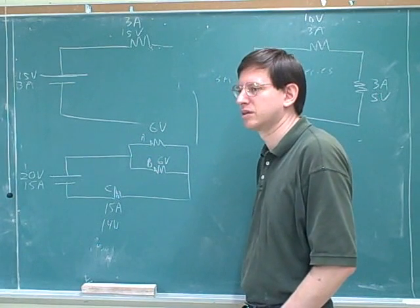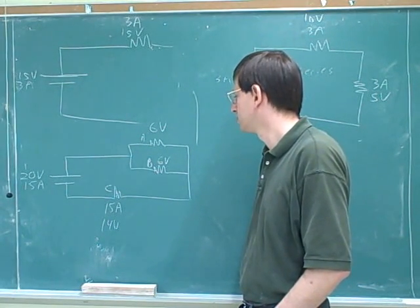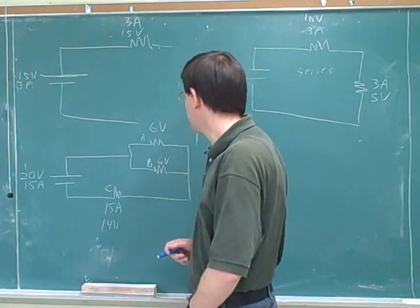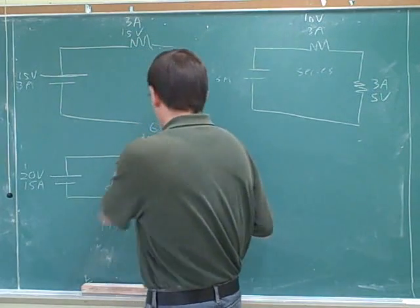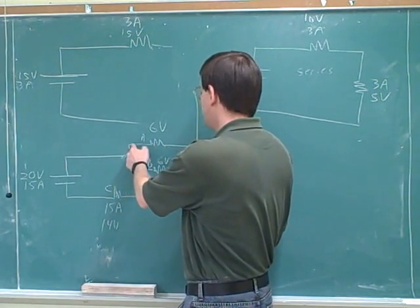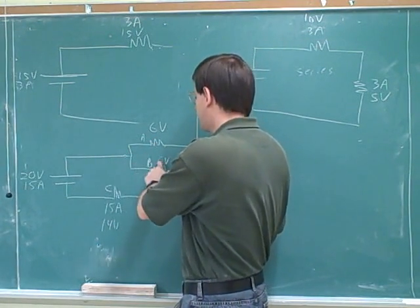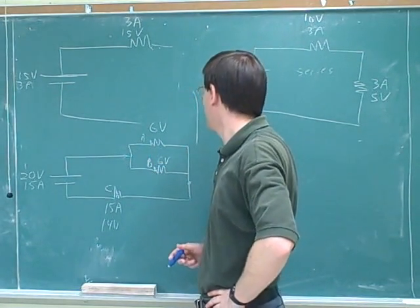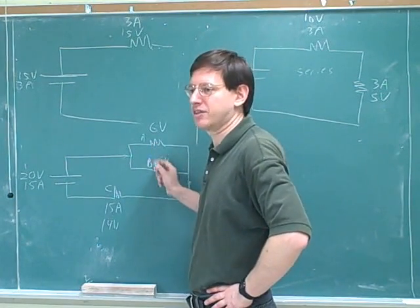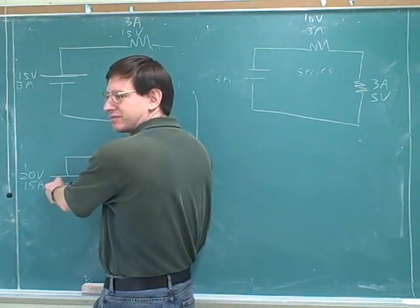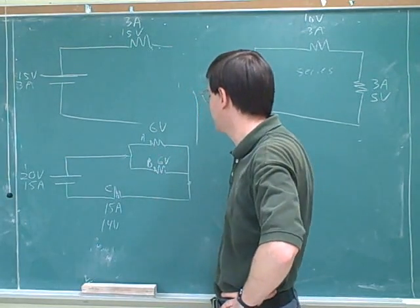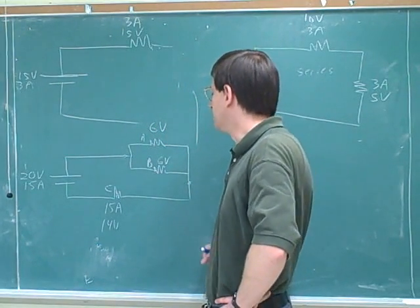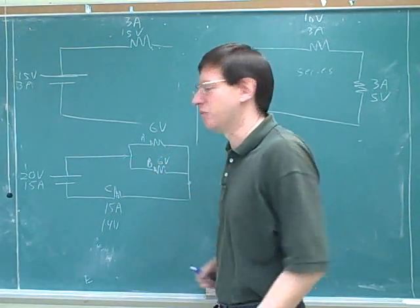Because B and C are in series, they have to have the same voltage change. One way to see that: we know that this plus this has to add to 20. Another way — if you have a skier going from here to here, and going through this path you're losing 6 units of height, then you must lose 6 units of height going through the parallel path, because you're going between the same two starting and ending points. Things in parallel have the same voltage change; things in series have the same current. These are the types of questions you'll need to be able to do — given circuits where you're told some numbers, you've got to figure out all the other numbers.